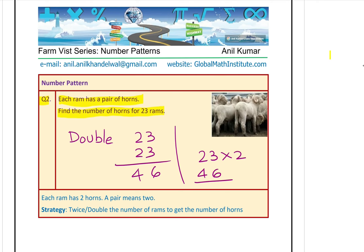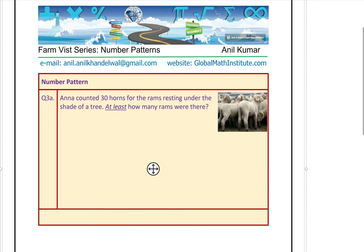Each Ram has two horns — a pair means two. Therefore the strategy is double, or twice the number of Rams, to get the number of horns. So if you know the number of Rams and want to find the number of horns, you simply multiply the number of Rams by 2.